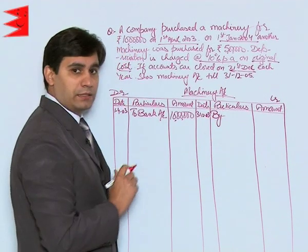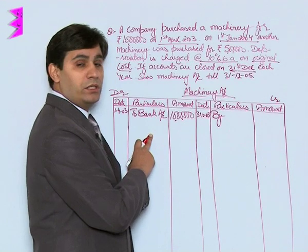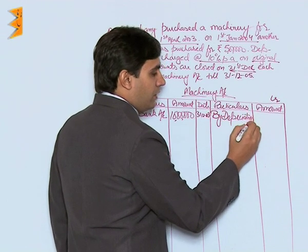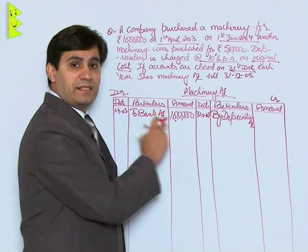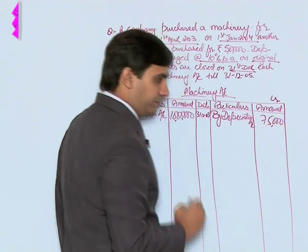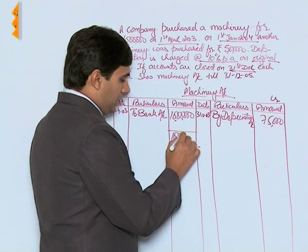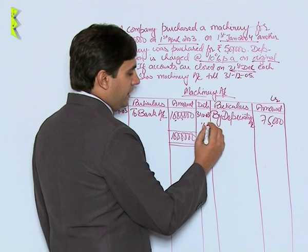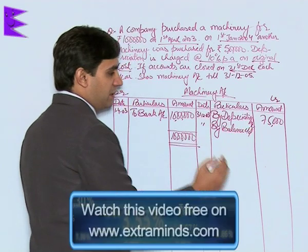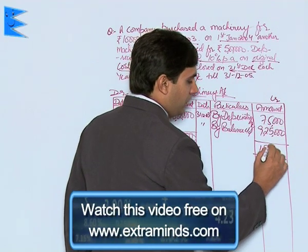The machinery was used for nine months — from April through December. So depreciation is charged for nine months: 10 lakh × 10% × 9/12 = rupees 75,000. On 31st December 2003, we balance the account. The debit side totals 10 lakh. By balance carried down: 10 lakh minus 75,000 = rupees 9,25,000. Total on both sides is 10 lakh.